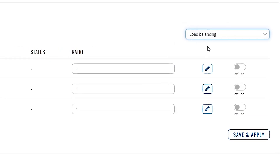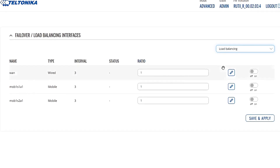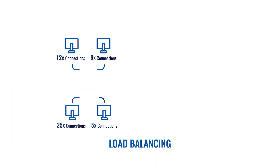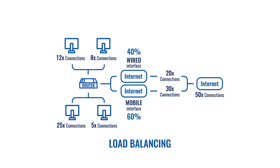Configuration logic is pretty simple. You assign ratio values to the interfaces which represent the percentage of load that will go through. For example, if you give 3 to the mobile and 2 to the wired, with 50 total connections going to the internet, roughly 60% of data connections will go through the mobile interface and 40% through the wired. As simple as that.